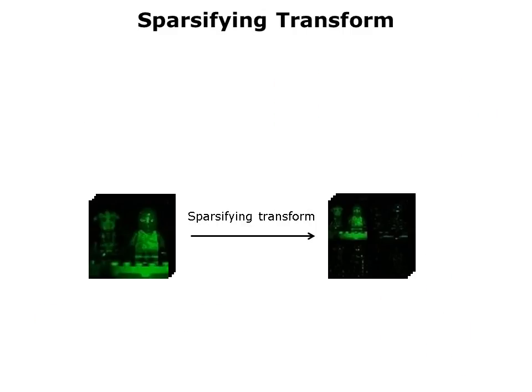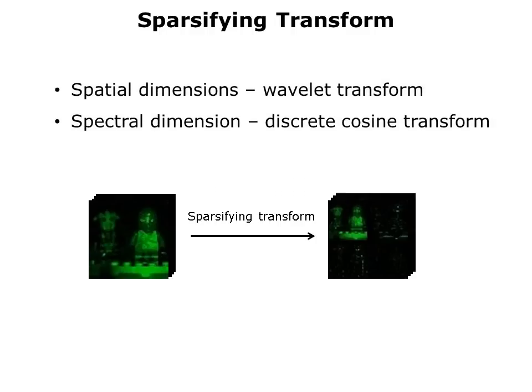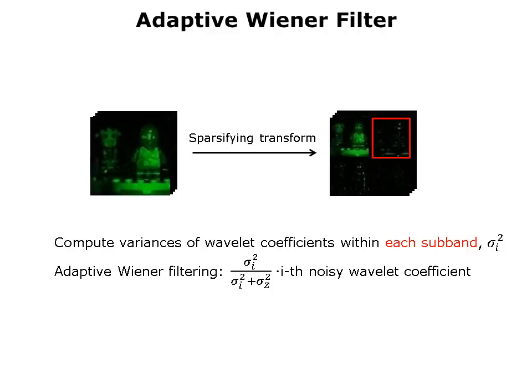For our 3D denoiser, we use a sparsifying transform applied to the image cube, giving us sparse transform coefficients. The sparsifying transform has two components: in the two spatial dimensions, we use a wavelet transform, and along the single spectral dimension, we use a discrete cosine transform. Having applied the sparsifying transform, we again apply an adaptive Wiener filter, slightly modified: we compute the variances of the wavelet coefficients not per coefficient based on its neighbors, but per subband. Having estimated the variance per subband, we apply a Wiener filter, and then take the inverse transforms to go back to the hypercube.